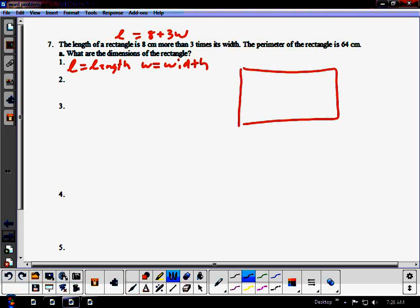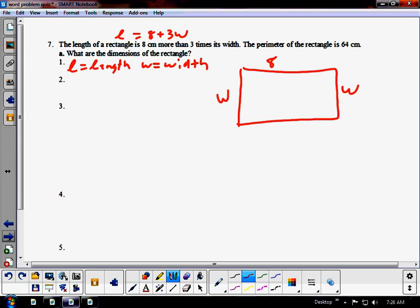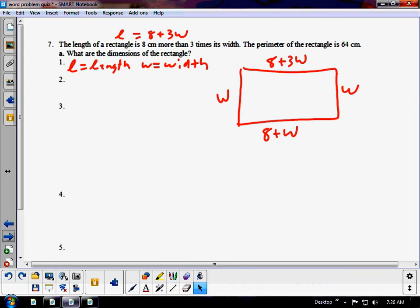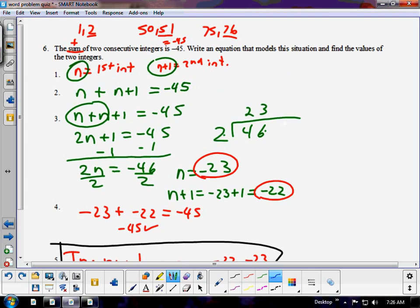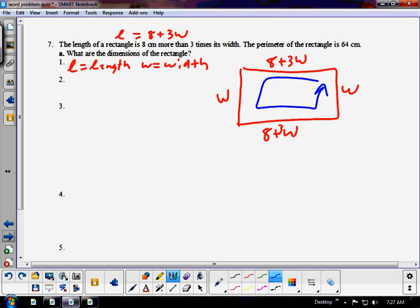The length of a rectangle is 8 more than 3 times the width. The perimeter of a rectangle is 64. So, this is, again, like the last question. L equals length. W equals width. The length is 8 centimeters more than 3 times the width. So, we're going to use that to find the perimeter. But, again, the perimeter is adding up all around the outside. So, I'm just going to use W. And instead of putting L, I'm going to put 8 plus 3W. If I add up all the way around the outside, that's got to equal 64. So, let's add 8 plus 3W plus W plus 8 plus 3W plus W equals 64.